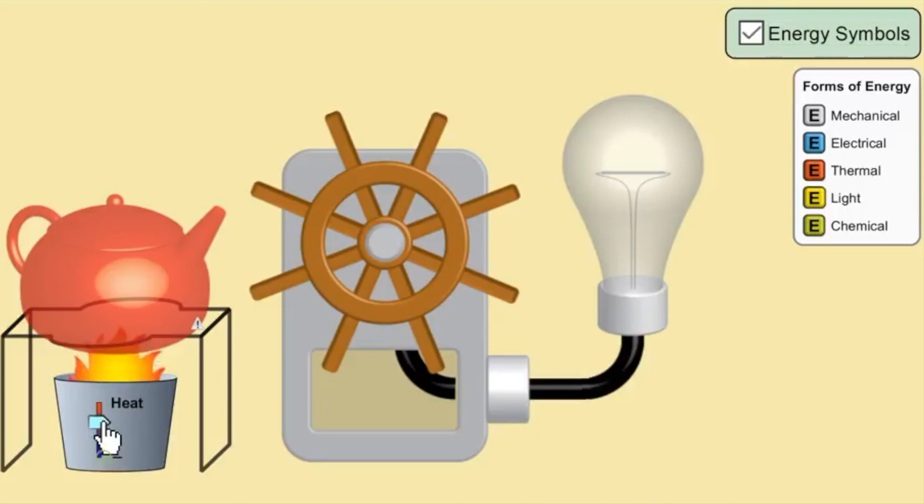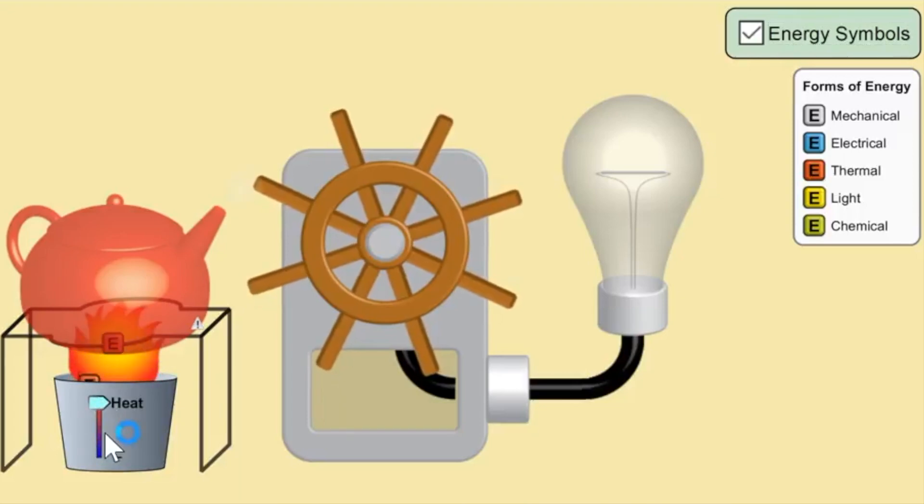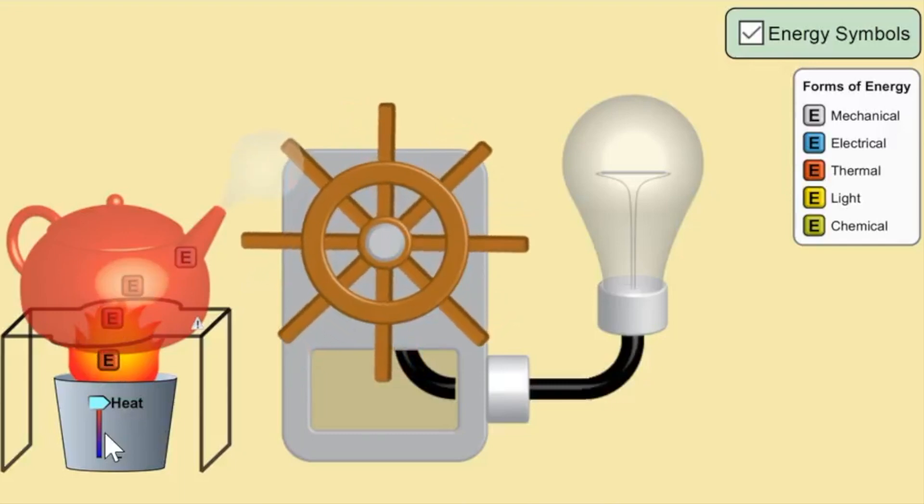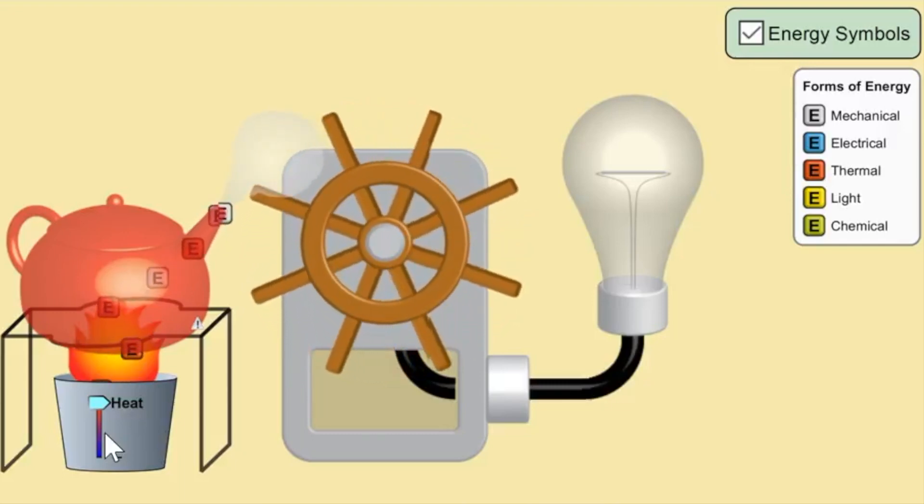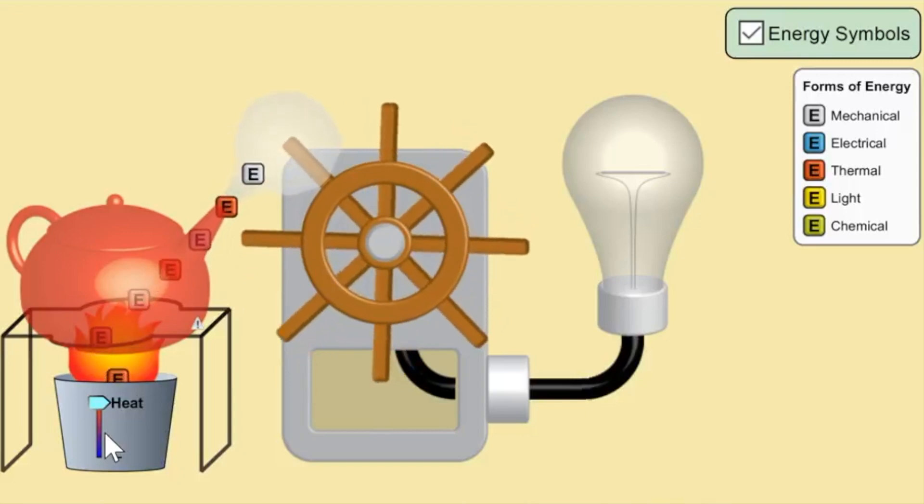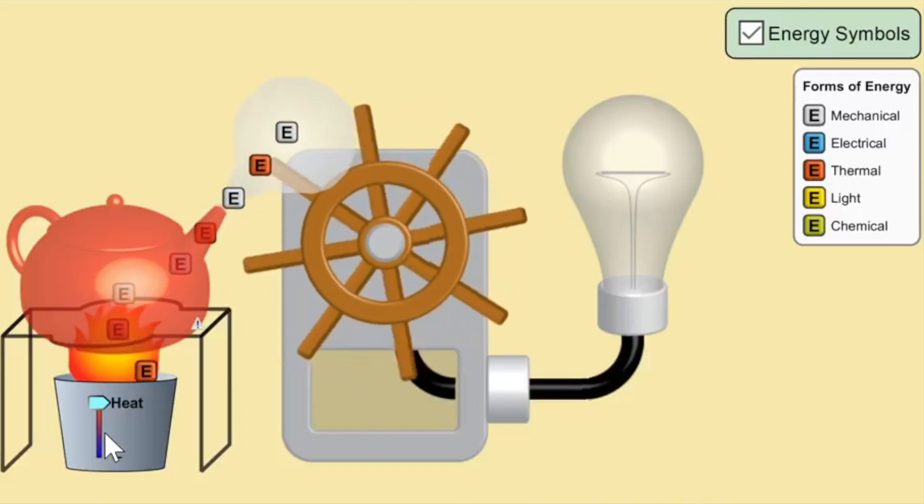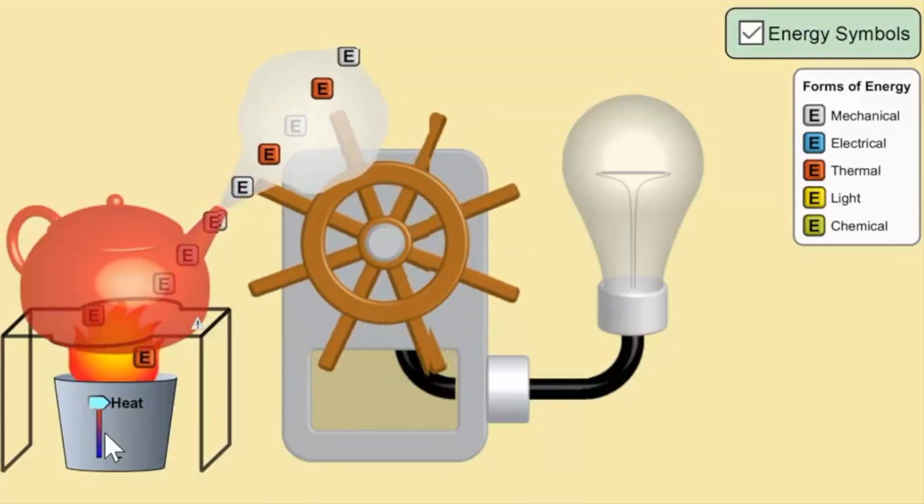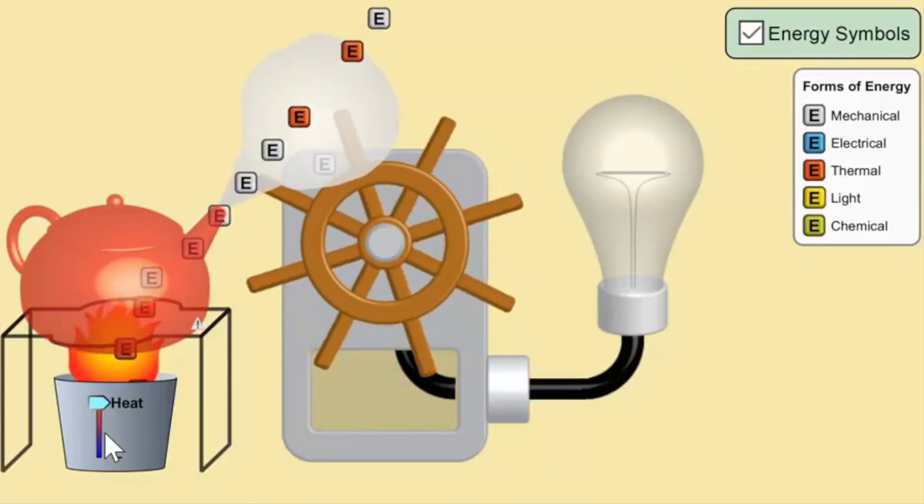So we're going to heat this kettle that's full of water with some thermal energy in the form of a flame. As you can see from the red E's, we have some thermal energy right below the kettle. Now that energy is being used to transfer to the water to heat the water up.